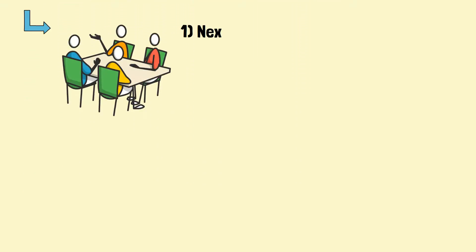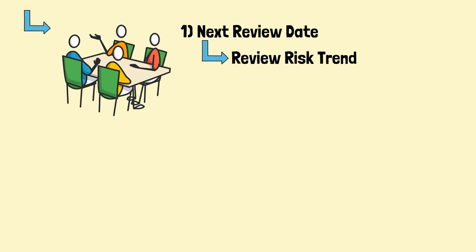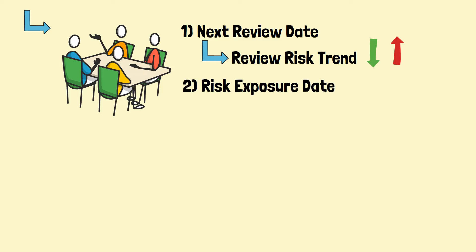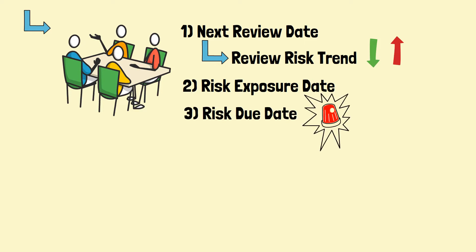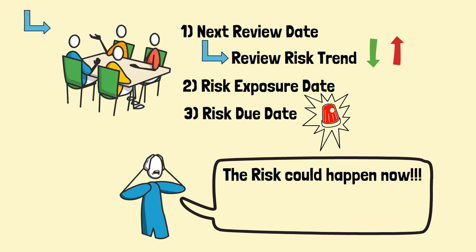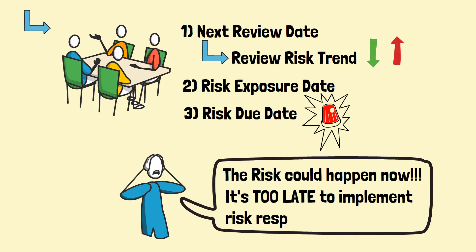The next review date for the risk should be captured in the risk register, with the purpose of regularly checking on the risk status. The risk trend — i.e., improving or deteriorating — is also discussed. If possible, the start date of risk exposure should be stated as well. The risk due date is when the risk will happen, or when the task impacted by the risk will be executed. Any response planned after the risk due date is meaningless.